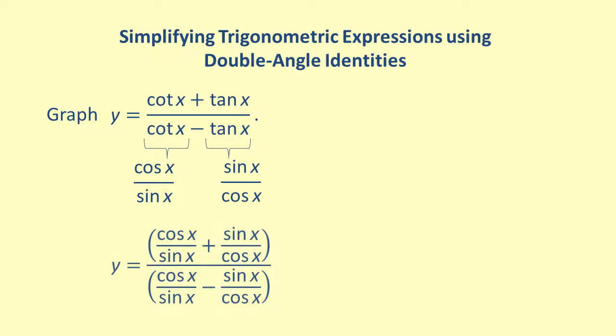This gives us y equals the quantity cosine of x over sine of x plus sine of x over cosine of x over the quantity cosine of x over sine of x minus sine of x over cosine of x.